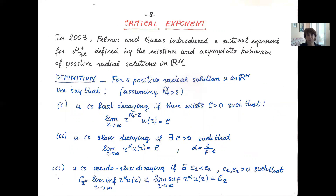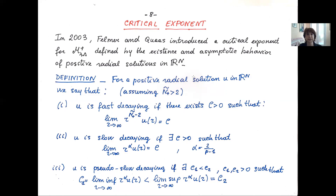What are these critical exponents? In 2003, a very interesting paper by Felmer and Quaas introduced a critical exponent in the radial setting. In the case of the Laplacian one can use the critical Sobolev exponent, but here we are in a non-variational setting. Felmer and Quaas defined a critical exponent using the asymptotic behavior of the solution at infinity in the whole space.